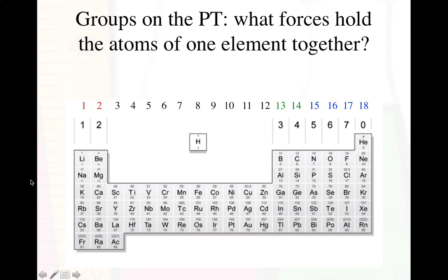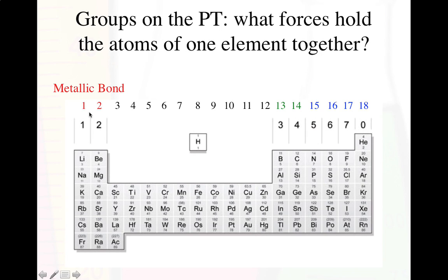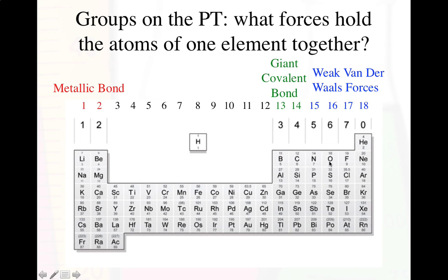Just as a reminder, we can count our columns on the periodic table, our groups, either by skipping the transition metals — that's 1, 2, 3, 4, 5, 6, 7, 0 (or sometimes 8) — or we can count all the way across, which includes all the transition metals. The first two columns and most in between are held together by metallic bonds. We have giant covalent bonds in columns 3 and 4, and weak van der Waals forces in columns 5 through 7, and a little bit in 18 as well.